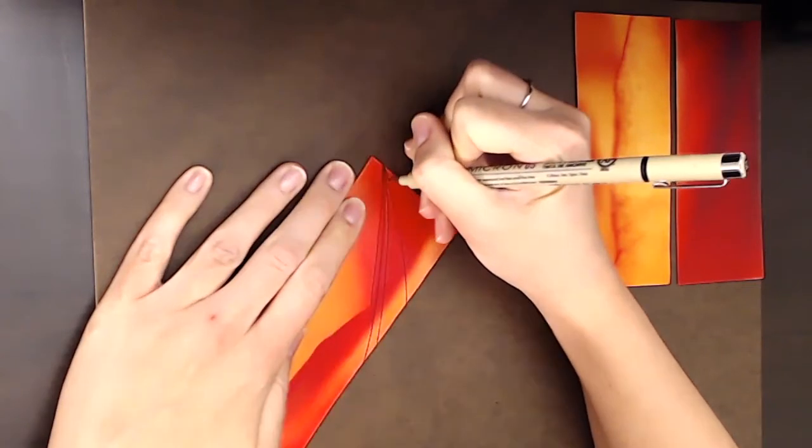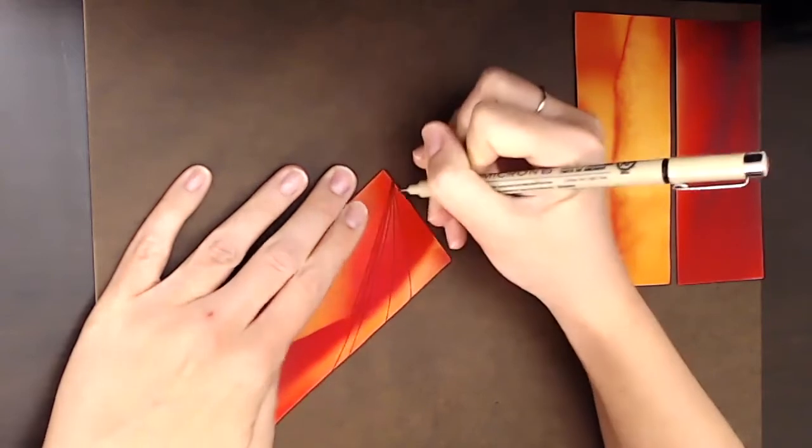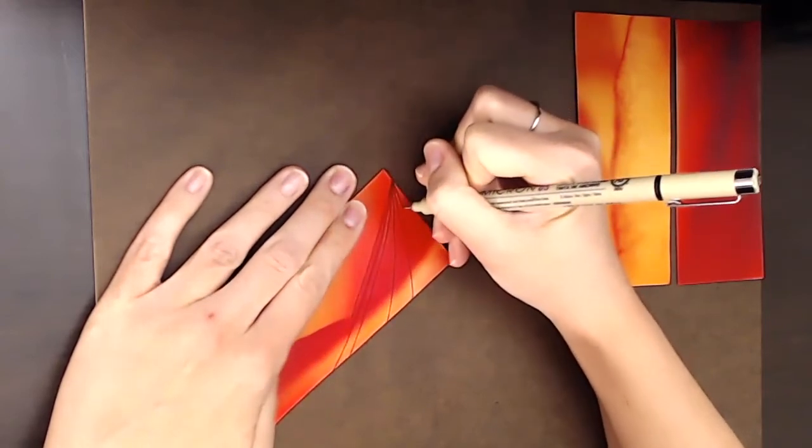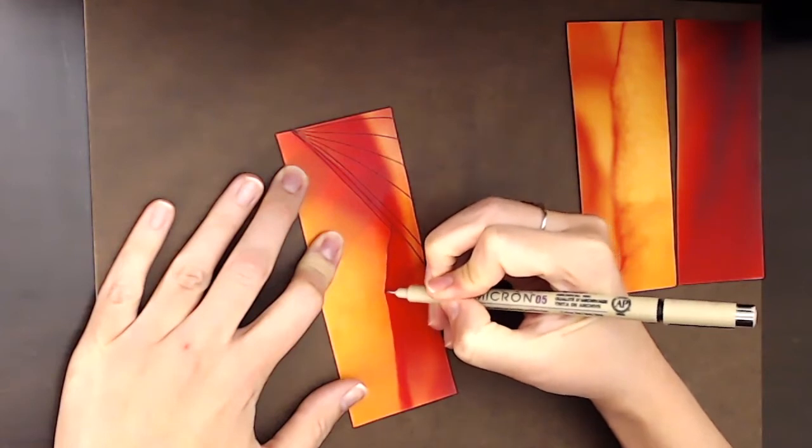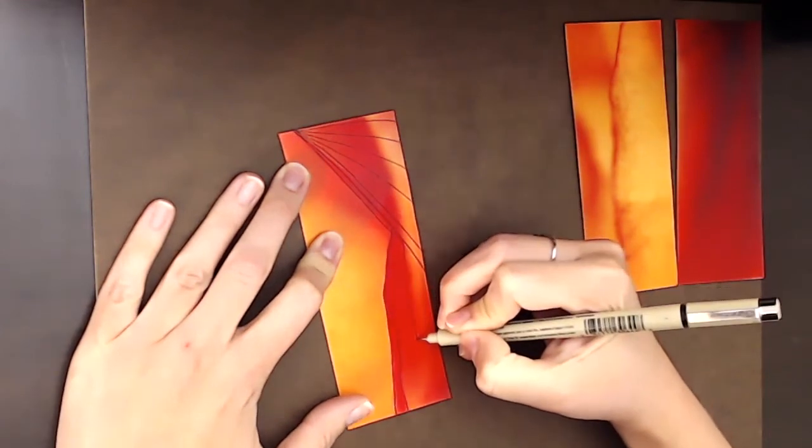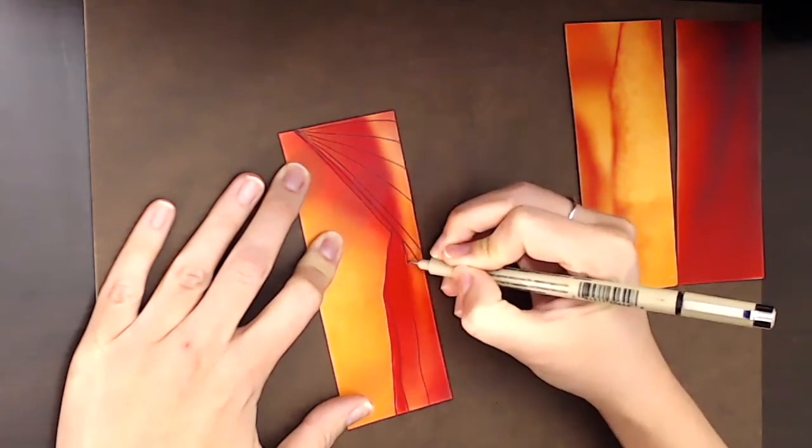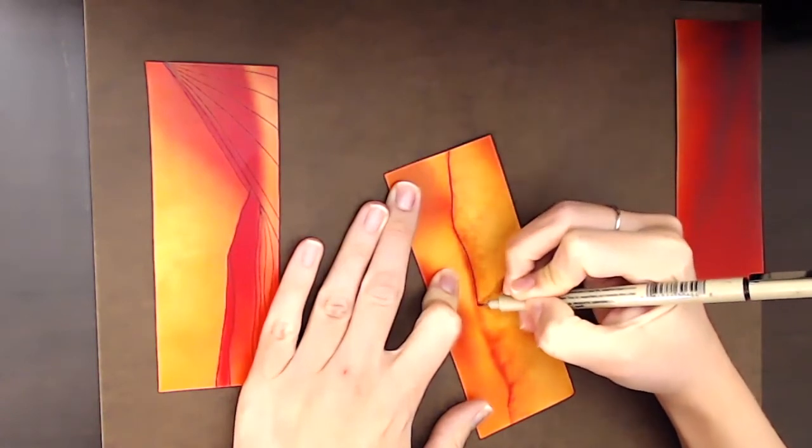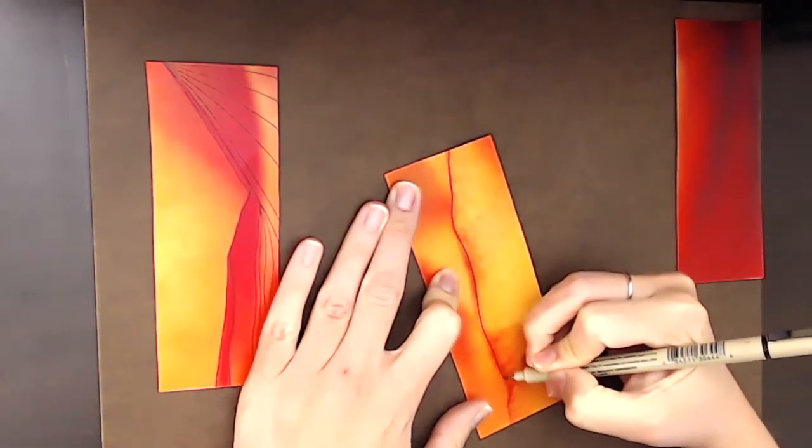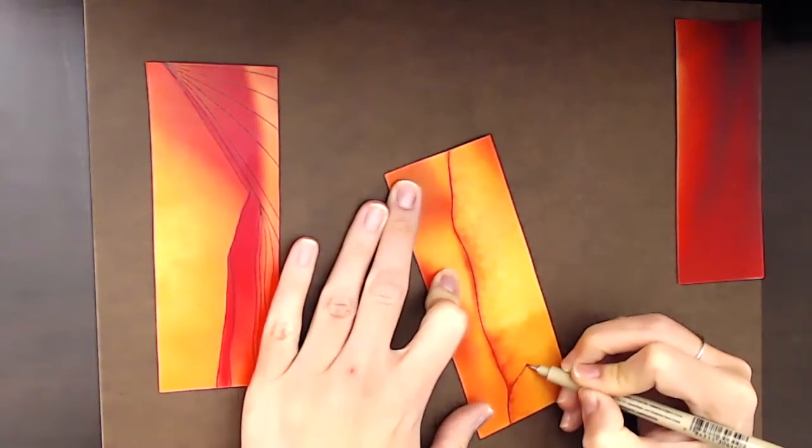So today's prompt is Dancing with Edges, and as you can see here, I'm using that abstract image to inform the marks that I'm making. I'm just noticing any shapes that are already on that magazine background and taking a moment to enhance it or create something slightly new and different with my ink drawing. I am using just a micron pen here. It's very simple, minimalistic art supplies that we'll need for today's projects.